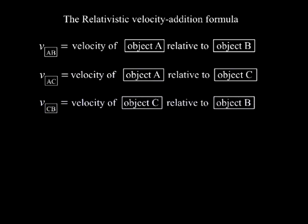The relativistic velocity addition equation is VAB equals VAC plus VCB divided by 1 plus VAC VCB divided by C squared.